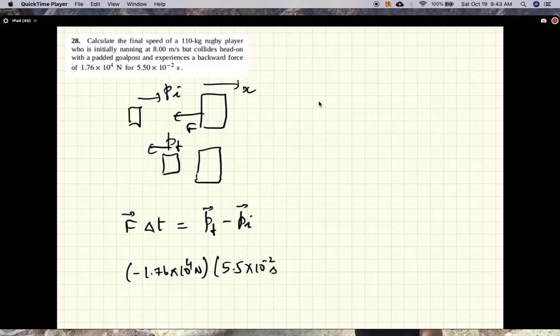That should equal V final minus V initial. So this is equal to mass times V final minus V initial.